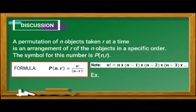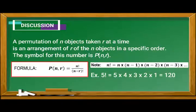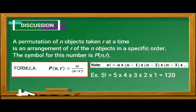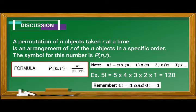Example: 5 factorial is equivalent to 5 times 4 times 3 times 2 times 1 which is equivalent to 120. Remember, 1 factorial is equivalent to 1 and 0 factorial is equivalent to 1.